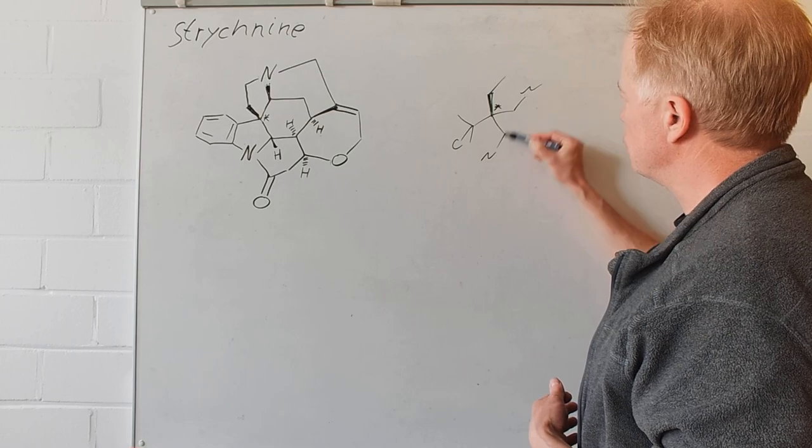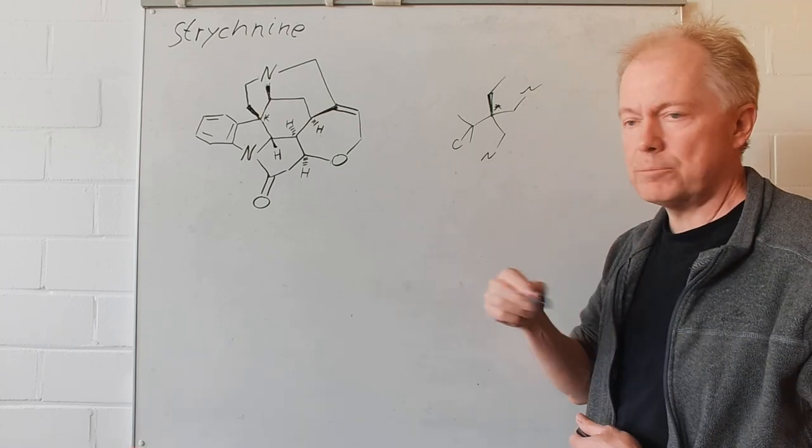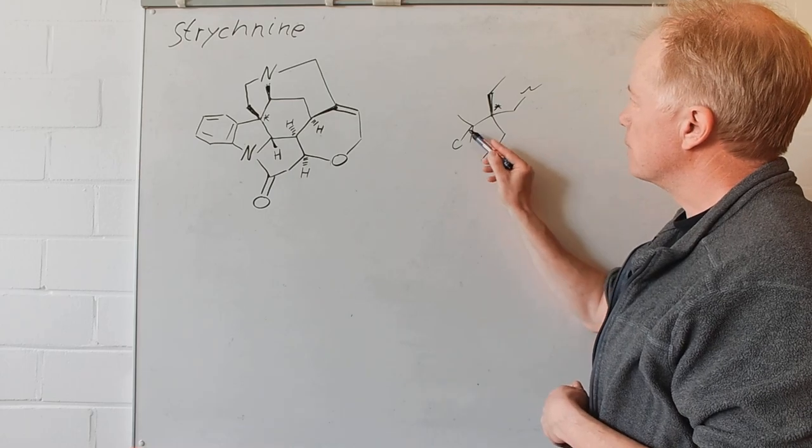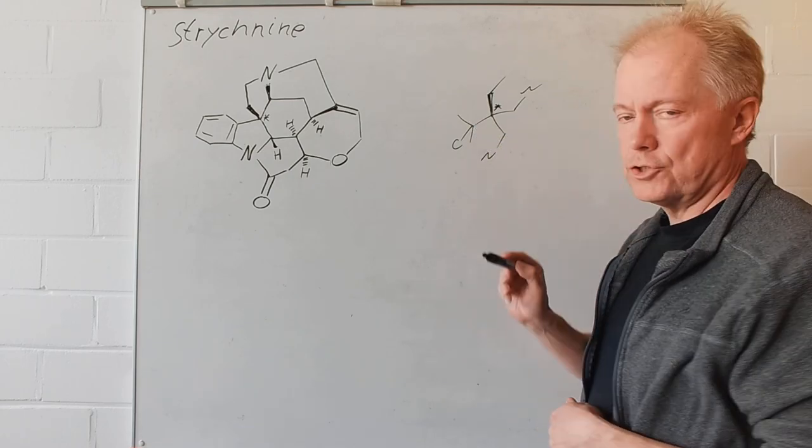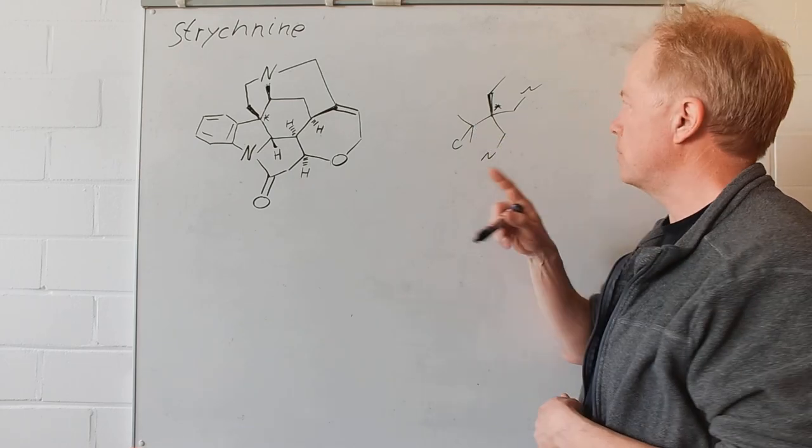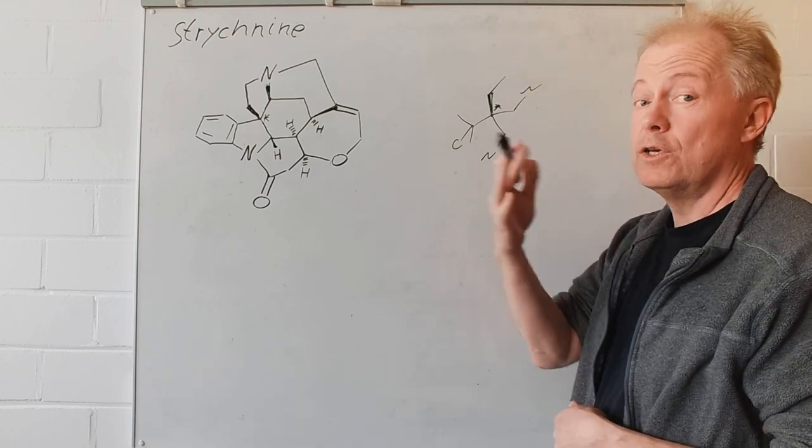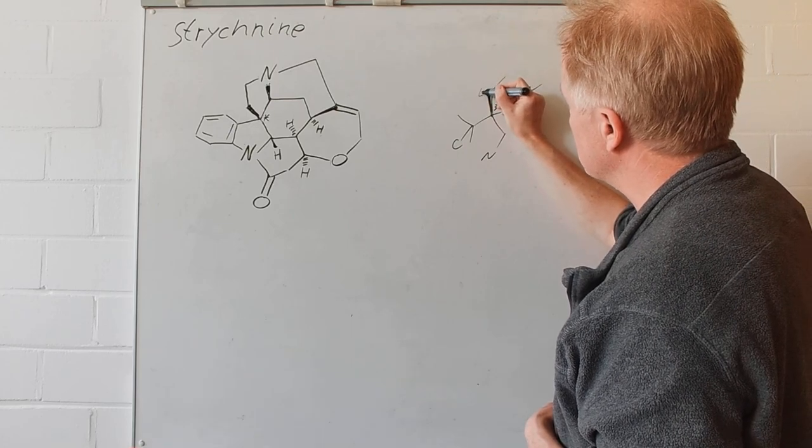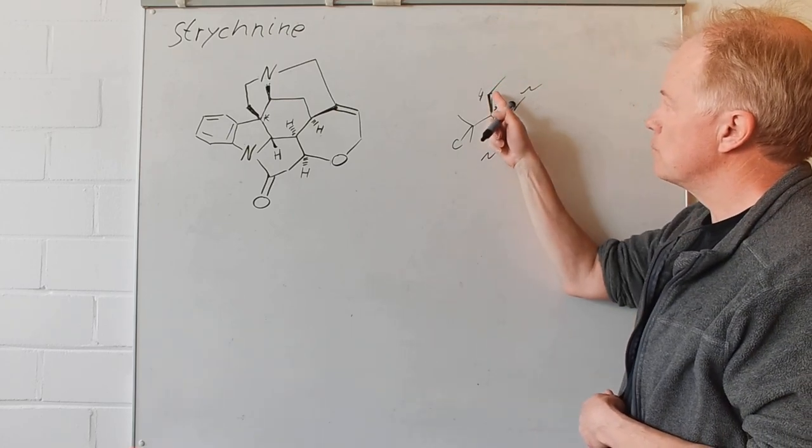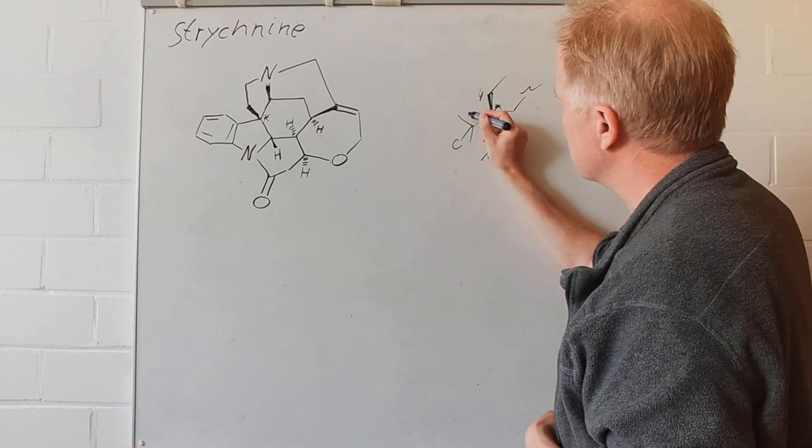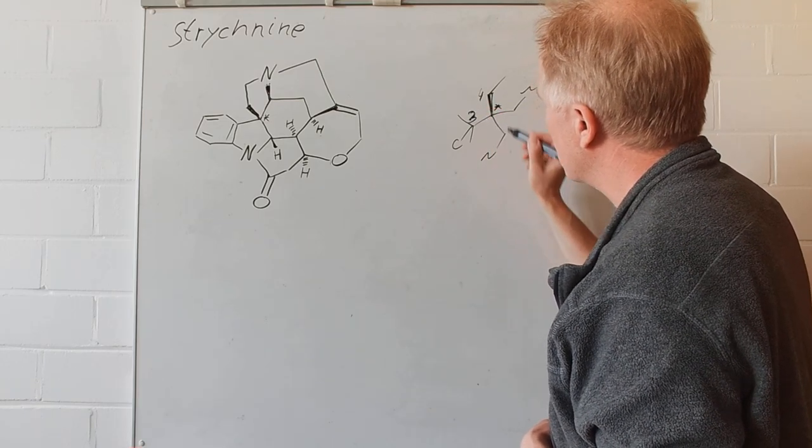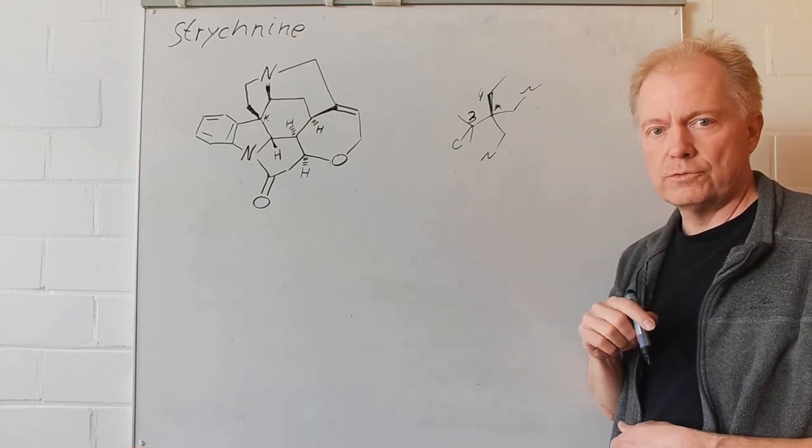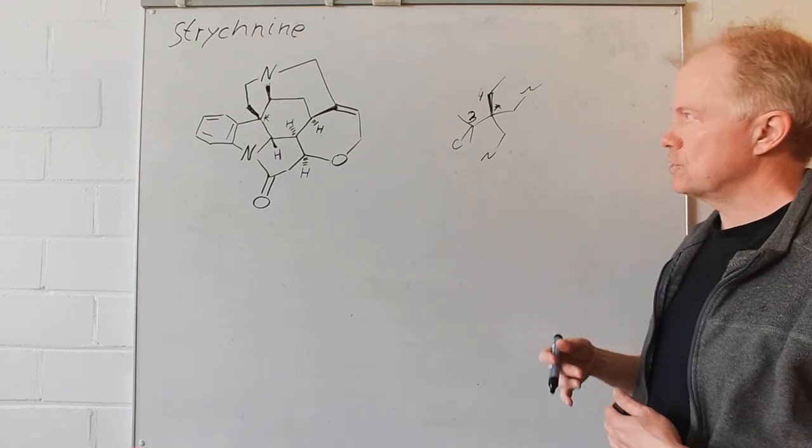That means those two chains have a higher priority compared to the other two. The one with three additional carbons has a higher priority compared to this one. This one has the lowest priority. This means we can assign a four for this substituent, a three for this substituent and we don't know yet for those two. We have to make a further step.